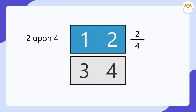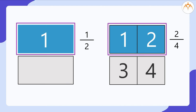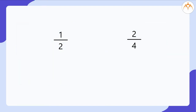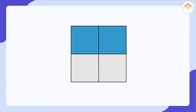Can you see that both 1 divided by 2 and 2 divided by 4 are still representing half of the paper which is colored? That means 1 divided by 2 and 2 divided by 4 are equivalent fractions.